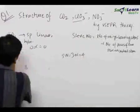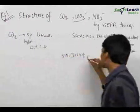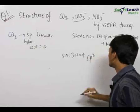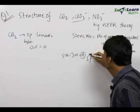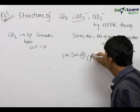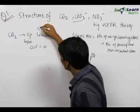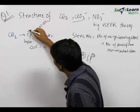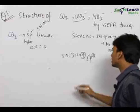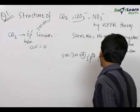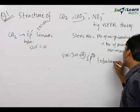We know that for steric number equal to 4, we have SP3 hybridization. Therefore, we incorporate 4 orbitals: 1 s and 3 p orbitals. Comparing with CO2, which had steric number equal to 2 and used 1s and 1p, here we have SP3 hybridization. Therefore, the geometry is tetrahedral.